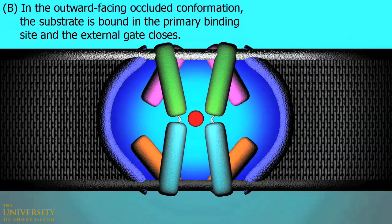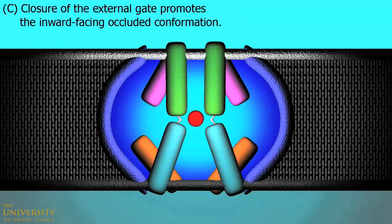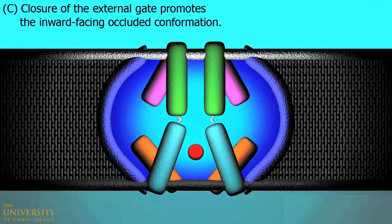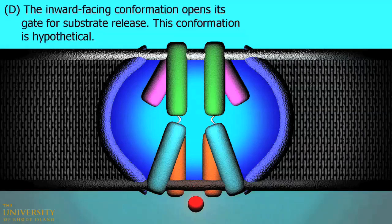In stage C, closure of the external gate promotes the inward-facing occluded conformation, and in stage D, the inward-facing conformation opens its gate for substrate release. This conformation is hypothetical.